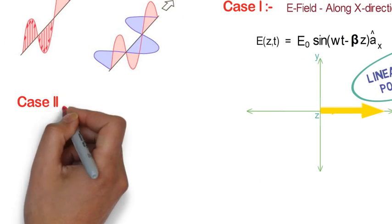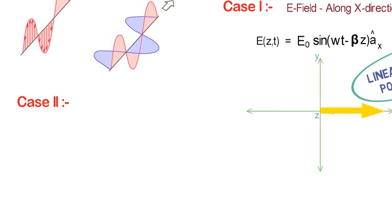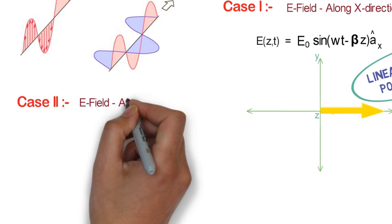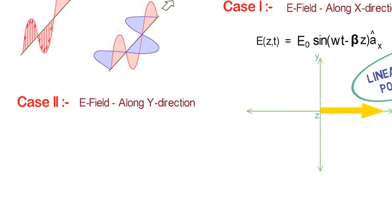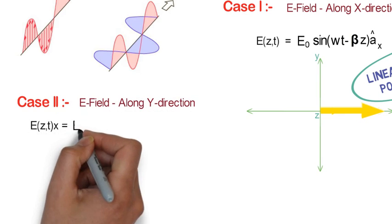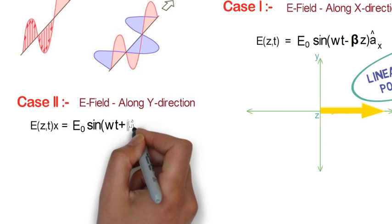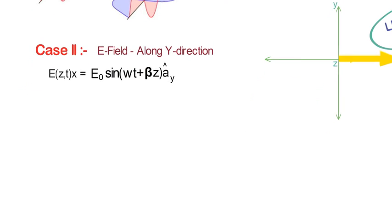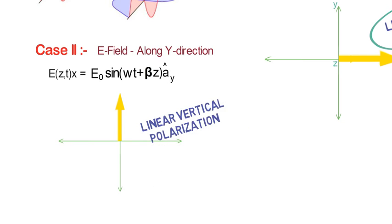In the similar manner, in case 2, if electric field is along y direction, that is E(z,t) = E0 sin(ωt + βz)ay, then again we will get the same plot but in y direction. So this wave is said to have linear vertical polarization.